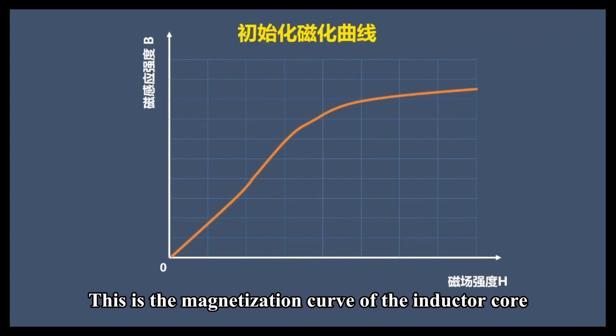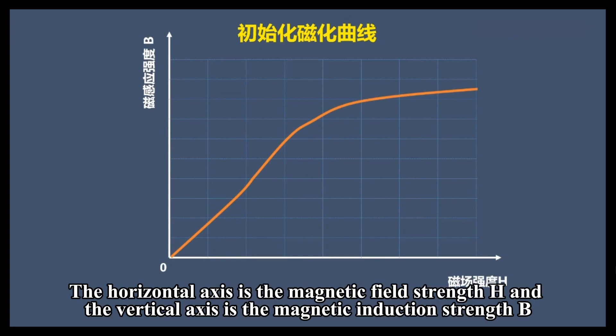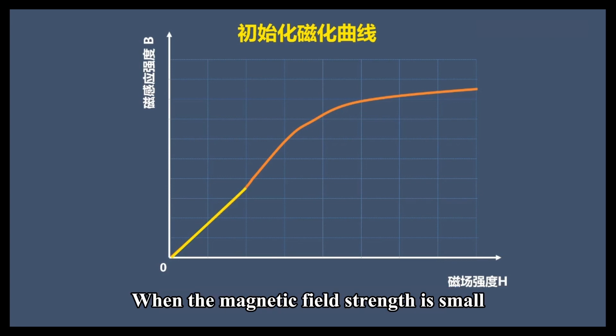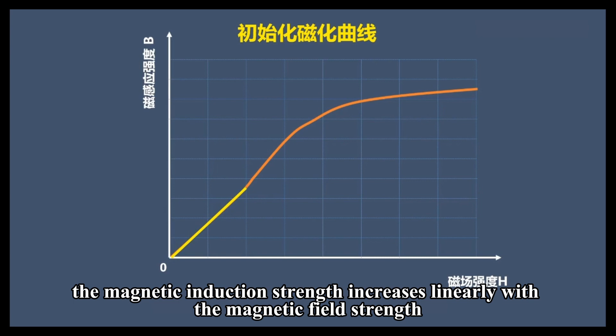This is the magnetization curve of the inductor core. The horizontal axis is the magnetic field strength H and the vertical axis is the magnetic induction strength B. When the magnetic field strength is small, the magnetic induction strength increases linearly with the magnetic field strength.